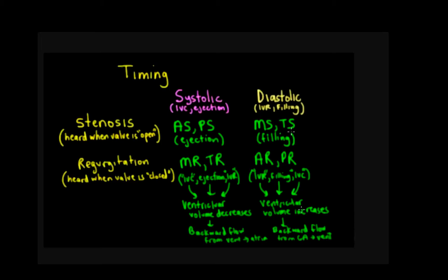For the regurgitation type, we hear the murmur when there's backward flow across a valve that's not closed properly. Mitral and tricuspid regurgitation are heard throughout systole — IVC, ejection, and IVR. Those isovolumetric phases are no longer truly isovolumetric because there's backward flow from the ventricle to the atria. For regurgitation in diastole, we have aortic and pulmonic regurgitation, heard throughout diastole, and we again lose our isovolumetric phases as volume increases in the ventricle from backward flow from the great artery.